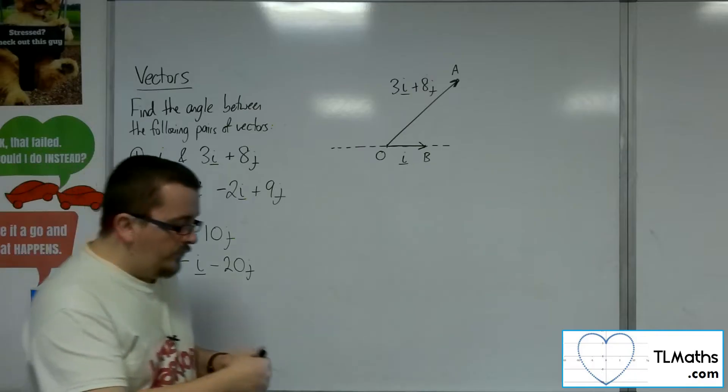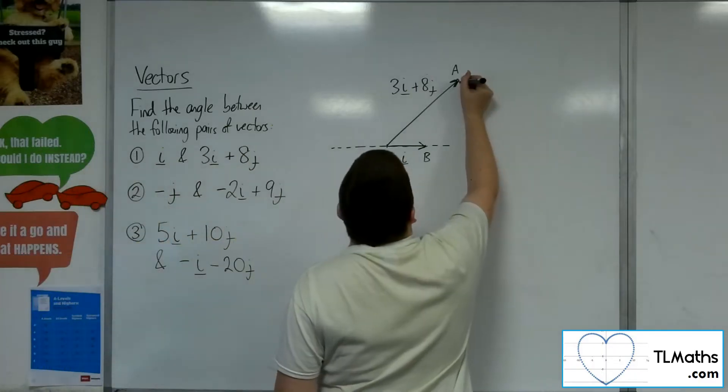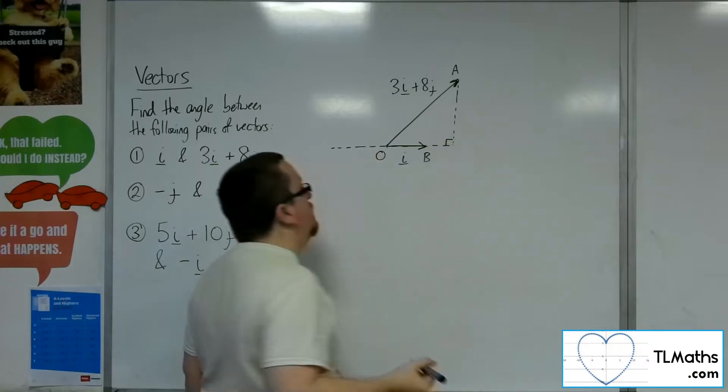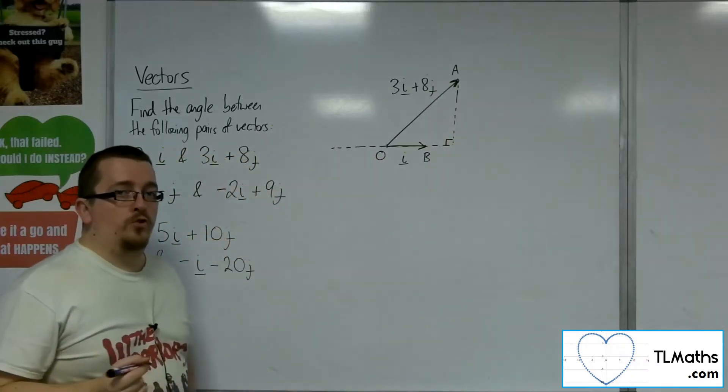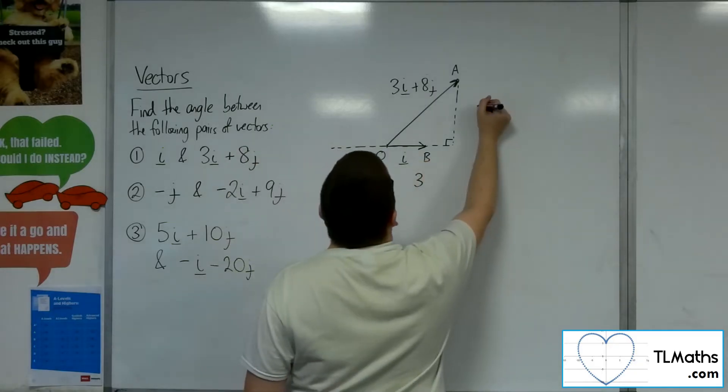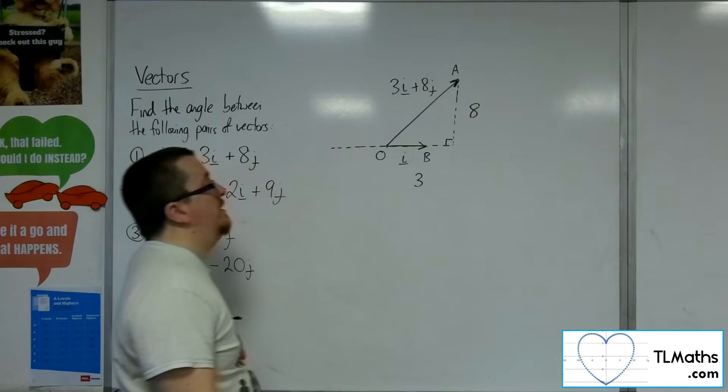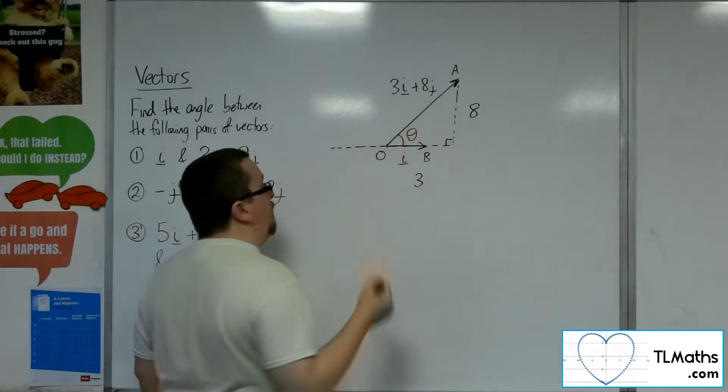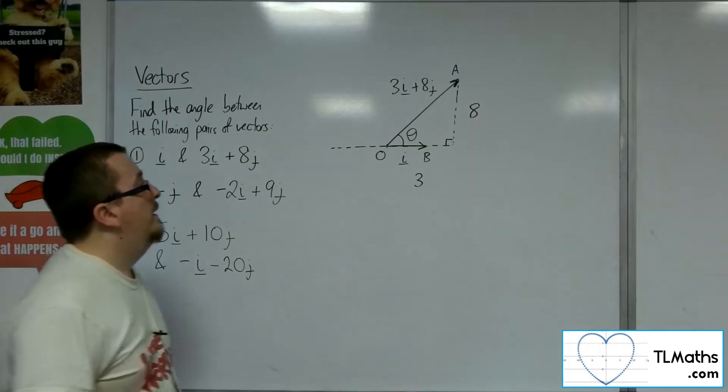Use the cosine rule to work out that angle. Now in this case, yes I could do that. However, it would be easier if I just drop a perpendicular here to make that right-angled triangle, and then I can see that actually this is just a triangle with base 3 and height 8.